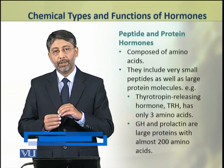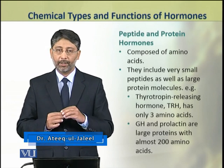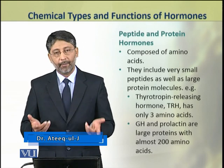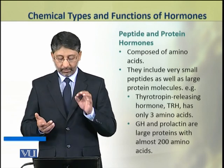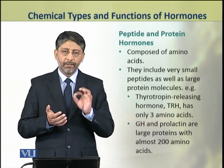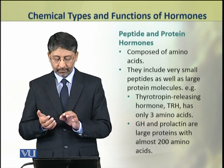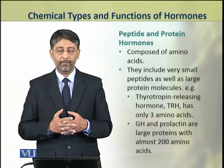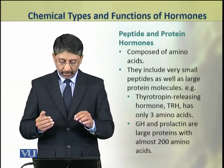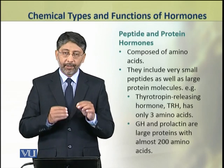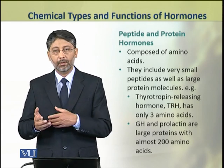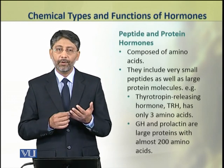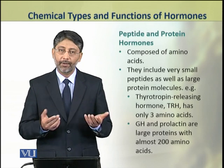First we shall discuss the peptide and protein hormones. They are composed of amino acids. They include very small peptides as well as large protein molecules. For example, the thyrotropin releasing hormone (TRH) released from the hypothalamus has only three amino acids in it — it is a very small peptide.